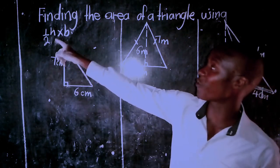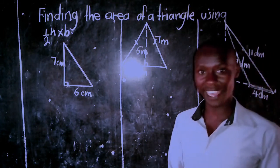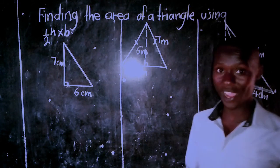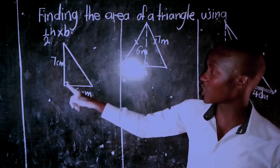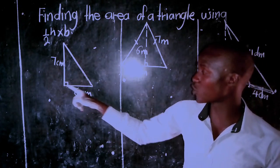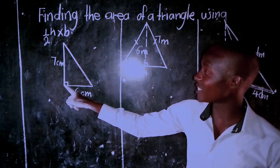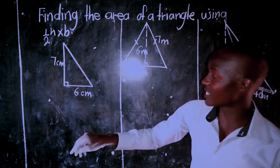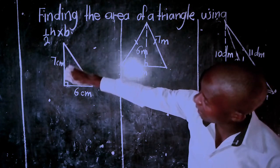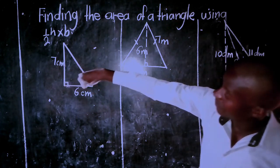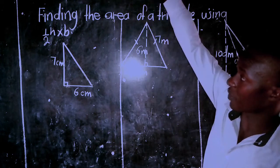Now when you're finding the area of a triangle, you use a half of height times base. The question is: where is the height and where is the base? The line standing perpendicular to the ground or to the base is the height, and it makes an angle of 90 degrees with the base. So this is my height and this is my base.